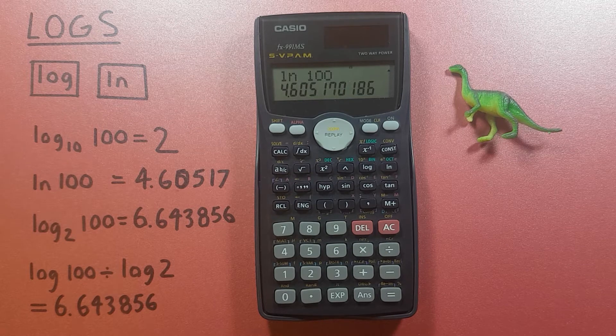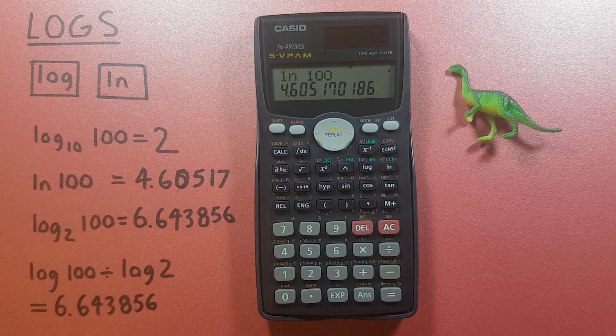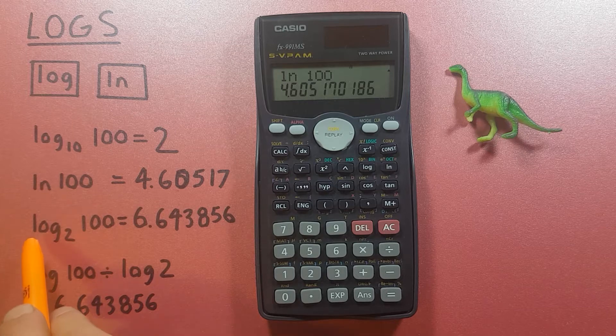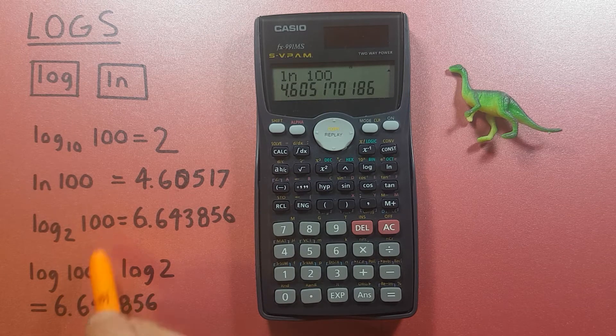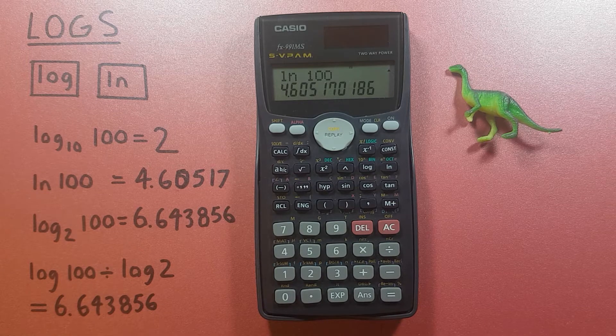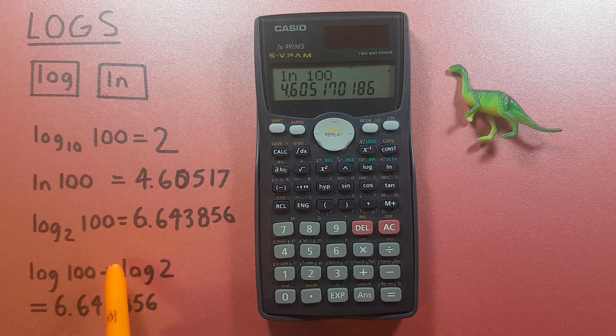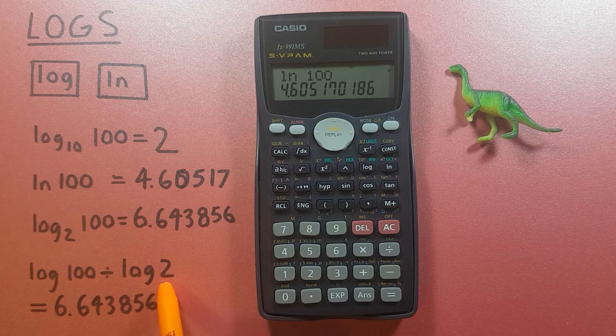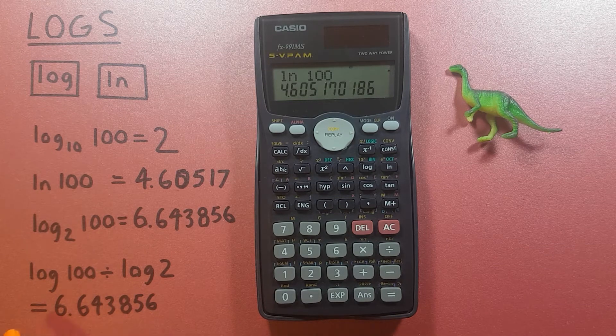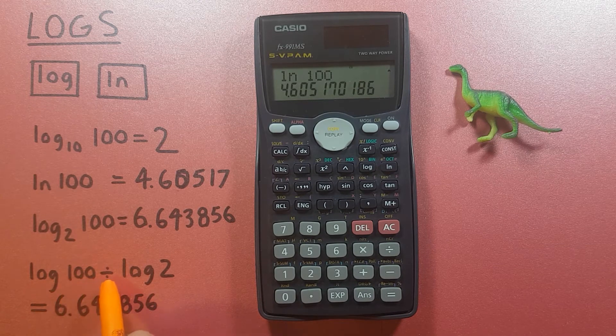Now what about a log base other than natural log or base 10, like for example log base 2 of 100? Well to do this you need to use something called the change of base formula, where you divide the log of the number by the log of the base. So for our example we'll be doing log of 100 divided by log of 2.